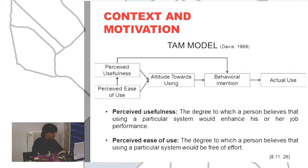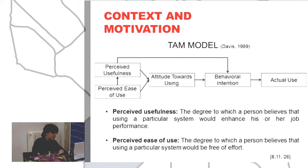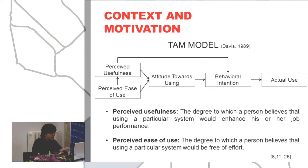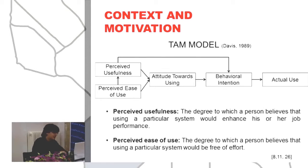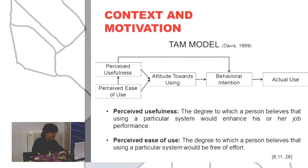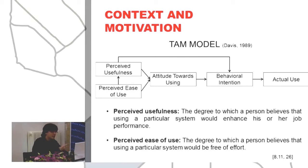These two concepts condition the behavioural intention of using a system, and this behavioural intention conditions the actual use. Davis recognized the existence of external variables that can affect perceived usefulness and perceived ease of use, but in its original model he did not depend on them. Also, he built an instrument based on a Likert-type scale in order to analyze these five concepts.